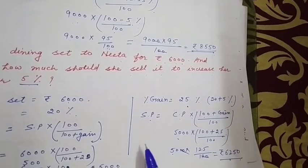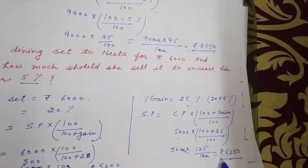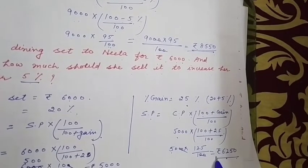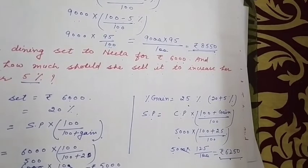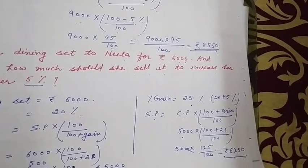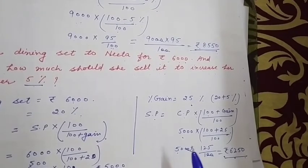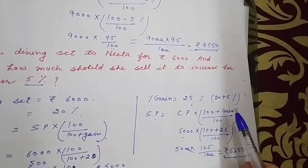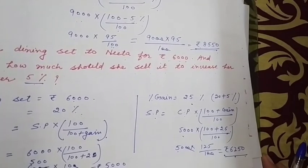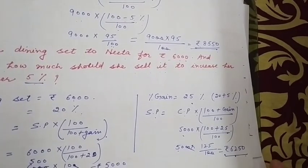अगर वो उसे ₹6,250 में बेचते तो 25% gain होता। पहले CP निकालनी है, फिर 20 + 5 = 25% gain पर selling price निकाल देनी है।